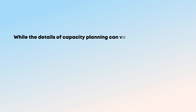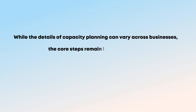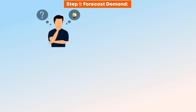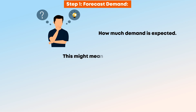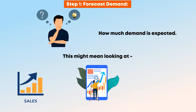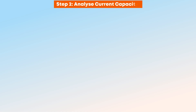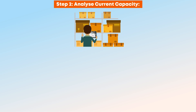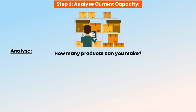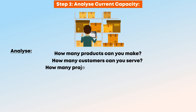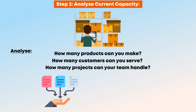Let's understand the capacity planning process in five simple steps. While the details can vary across businesses, the core steps remain largely the same. Step 1: Forecast Demand. Understand how much demand is expected by looking at past sales, market trends, or customer behavior. It's okay if predictions aren't perfect — it's about making informed guesses. Step 2: Analyze Current Capacity. Take stock of your current resources — how many products can you make, how many customers can you serve, or how many projects can your team handle? Use real data and feedback from staff.